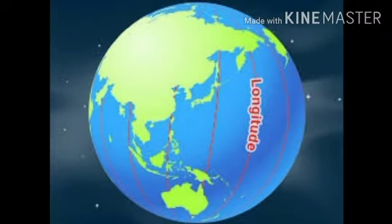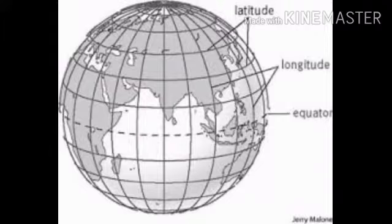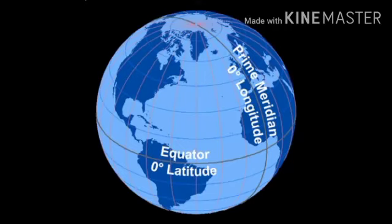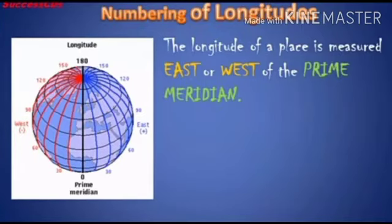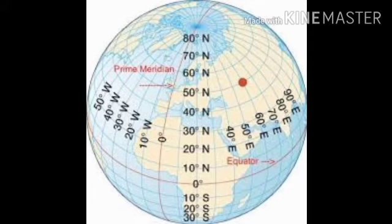Besides latitudes, there are vertical lines on the globe that meet at the poles. These lines are called longitudes or meridians. Among them, there is a prime meridian that is considered to be at zero degrees. The area falling east of it is known as the Eastern Hemisphere, and that of the west is known as the Western Hemisphere.